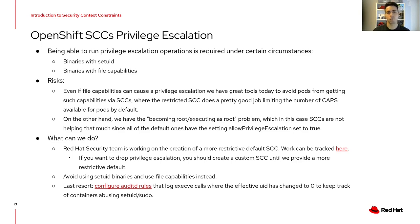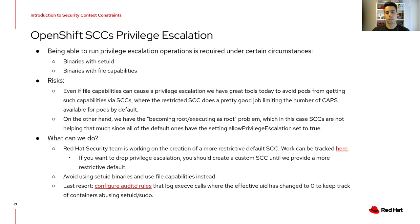However, being able to run privilege escalation operations is required in certain circumstances — for example when your application uses setUID binaries or binaries with file capabilities. The becoming-root problem is one where SCCs are not helping much, since all default SCCs in OpenShift have allowed privilege escalation set to true for maximum compatibility. The Red Hat Security team is working on a more restrictive default SCC, tracked via the link in the slides. At this point, if you want to drop privilege escalation, you should create a custom SCC. Also, avoid setUID binaries and instead provide the minimum required capabilities to your applications. As a last resort, configure audit rules to log execve calls where the effective UID has changed to zero.